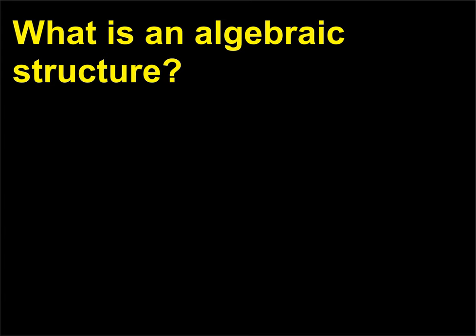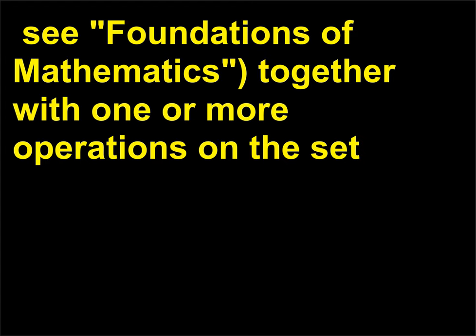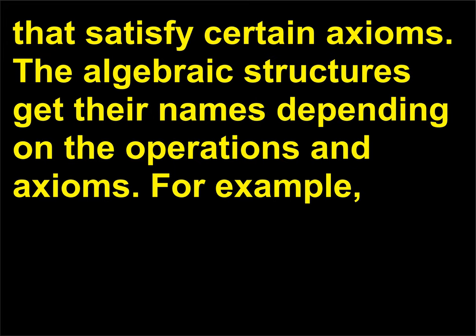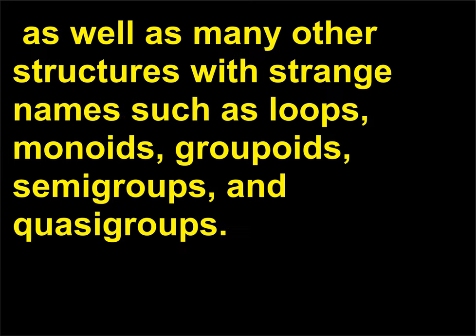What is an algebraic structure? An algebraic structure is made up of a set — a collection of objects called elements — together with one or more operations on the set that satisfy certain axioms. The algebraic structures get their names depending on the operations and axioms. For example, algebraic structures include fields, groups, and rings, as well as many other structures with strange names such as loops, monoids, groupoids, semi-groups, and quasi-groups.